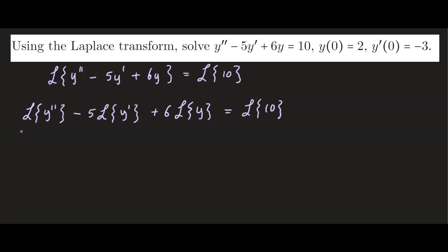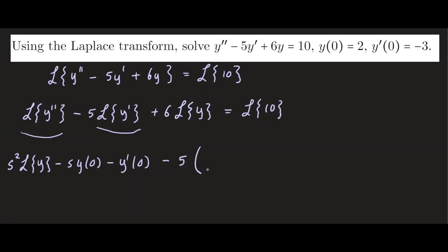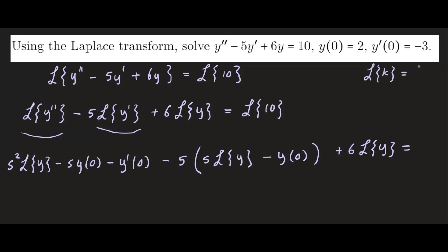Now we plug in what these transforms are, using the definition of the Laplace transform. The Laplace transform of the second derivative is s squared times the Laplace transform of y, minus s times y at 0, minus y prime at 0. The Laplace transform of y prime becomes s times the Laplace transform of y minus y at 0. The Laplace transform of 10 is simply 10 over s.